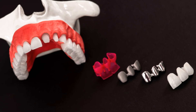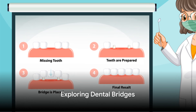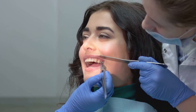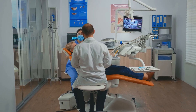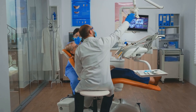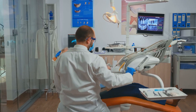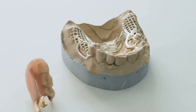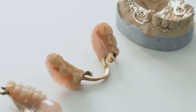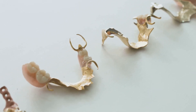Now that you understand what dental implants are, let's move on to dental bridges. Dental bridges, just as the name suggests, bridge the gap created by one or more missing teeth. They are essentially composed of two or more crowns for the teeth on either side of the gap, known as abutment teeth, and a false tooth or teeth in between. These false teeth, also known as pontics, can be made from a variety of materials such as gold, alloys, porcelain, or a combination of these materials.